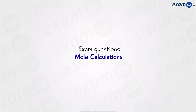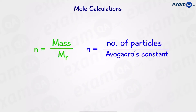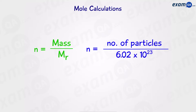Mole calculations. There are two important equations we have to know. On the left, moles is equal to mass divided by Mr. On the right, moles is equal to number of particles divided by Avogadro's constant, which by now you should know is 6.02 times 10 to the power of 23.